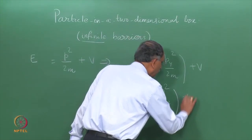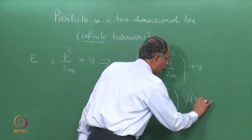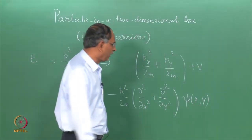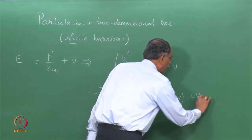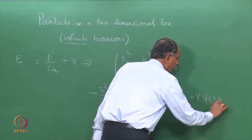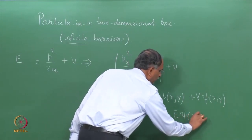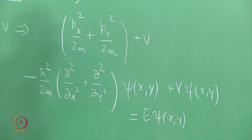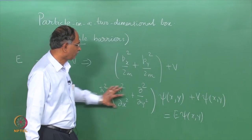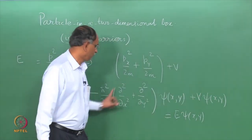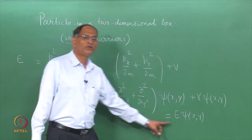This is the operator part for the kinetic energy of the Hamiltonian, plus the wave function is a function of x and y, plus V times psi(x,y) equals E times psi(x,y). This is the two dimensional Schrödinger equation, in which the Hamiltonian H acting on psi gives you E times psi.